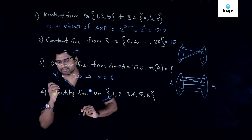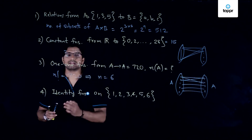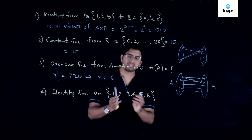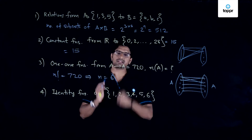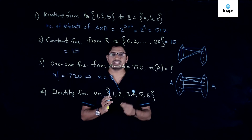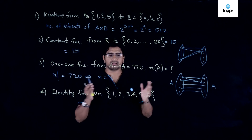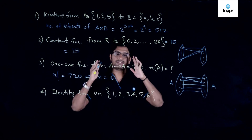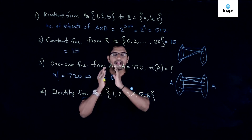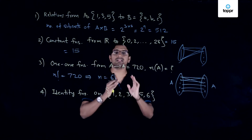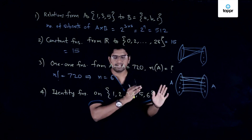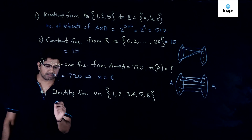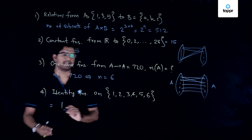Finally, the last part asks for the number of identity functions on a discrete set containing 6 elements. This is an important concept: regardless of the set — whether discrete or continuous like the real numbers — the number of identity functions is always 1. The identity function on any set is unique, a property of that set, so the answer is 1.